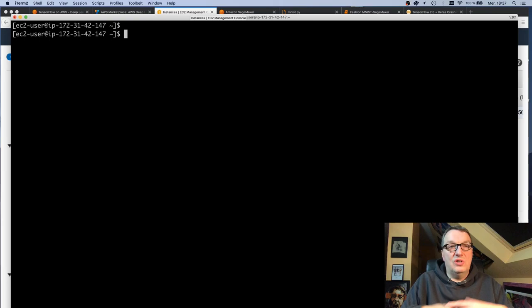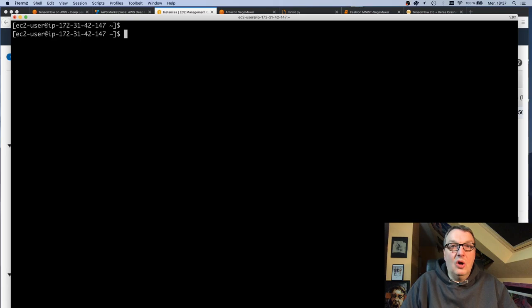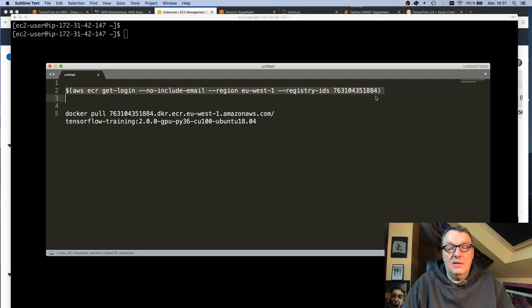So the first step is to log in to Amazon ECR, the Docker registry service for AWS. All images are stored in this AWS account. Make sure you provide the right region for that.